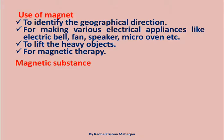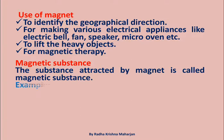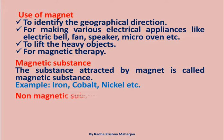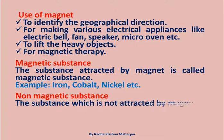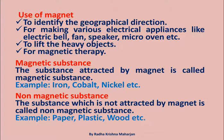Magnetic Substance: The substance attracted by a magnet is called a magnetic substance. Examples: iron, cobalt, nickel, etc. Non-Magnetic Substance: The substance which is not attracted by a magnet is called a non-magnetic substance. Examples: paper, plastic, wood, etc.